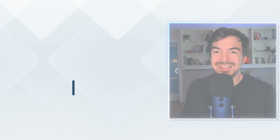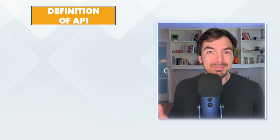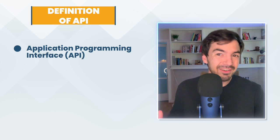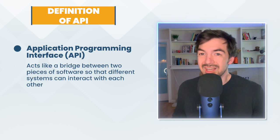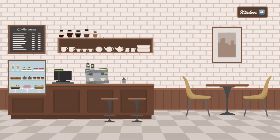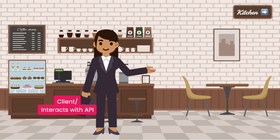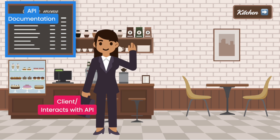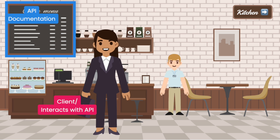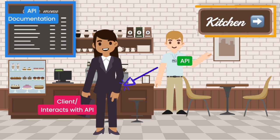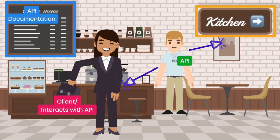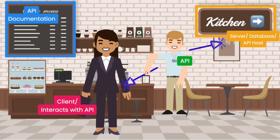Let's start by discussing what an API is. An API, or application programming interface, is really just something that acts like a bridge between two pieces of software so that two systems can talk to each other. One way you can think about this — we'll use a restaurant analogy. The customer can essentially act like the client, the person on the side that's about to interact with the API. The menu could almost act like your API documentation — it gives you the options of what you can actually do. The waiter is the API, the one that's going to interact with you and the back of house.